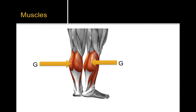So we have the gastrocnemius there. This is the superficial of the two muscles. It's relatively smaller in size overall compared to the soleus, and it actually has a medial head and a lateral head.